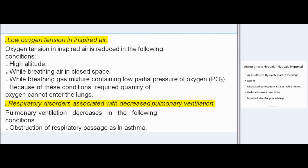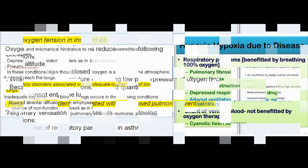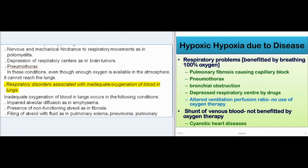Because of these conditions, the required quantity of oxygen cannot enter the lungs. Pulmonary ventilation decreases in conditions such as obstruction of the respiratory passage as in asthma, nervous and mechanical hindrance to respiratory movements as in poliomyelitis, depression of respiratory centers as in brain tumors, and pneumothorax. In these conditions, even though enough oxygen is available in the atmosphere, it cannot reach the lungs.